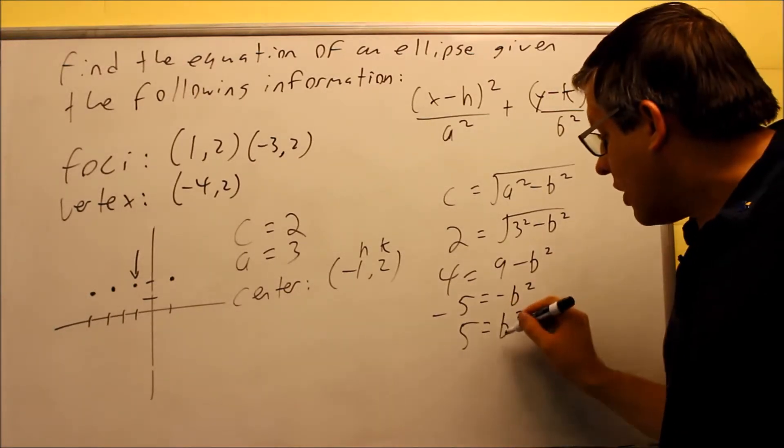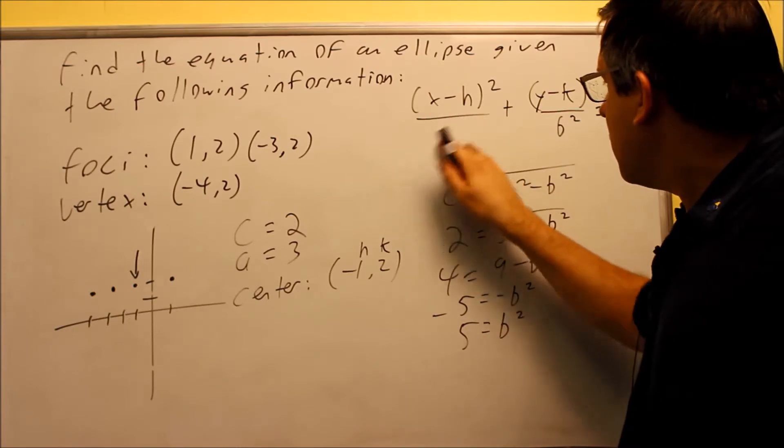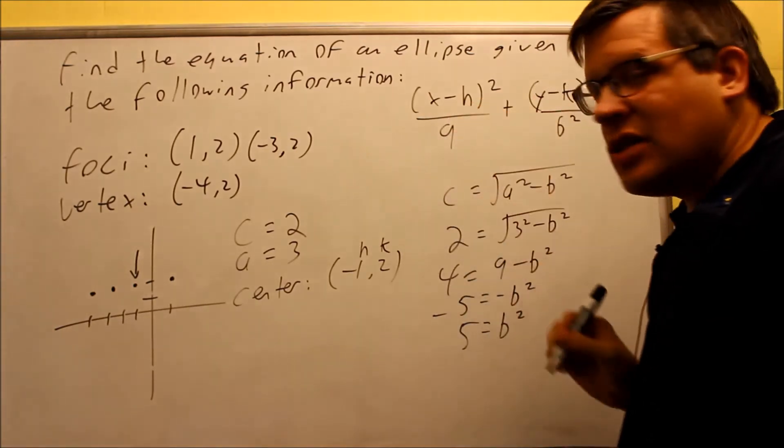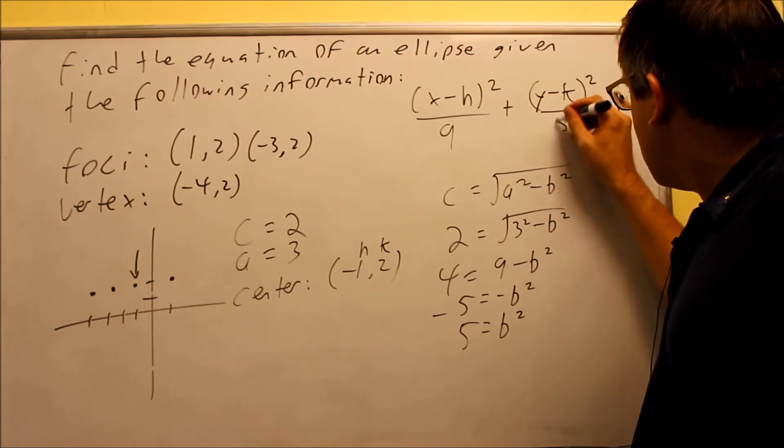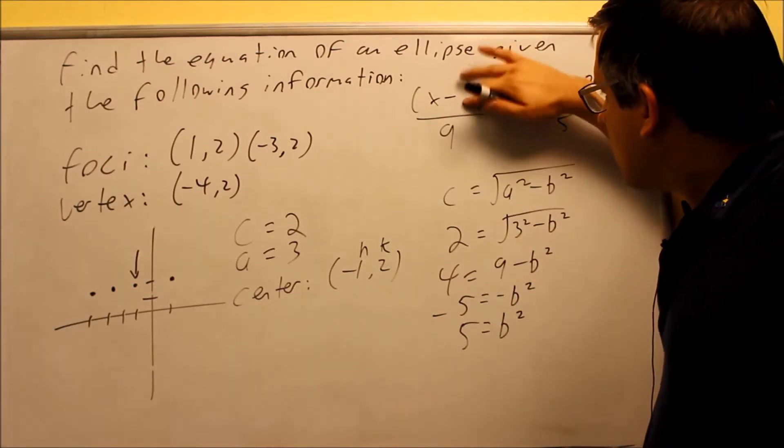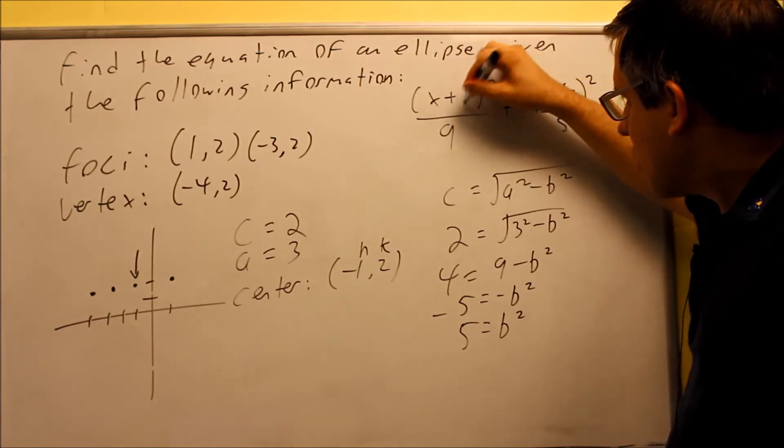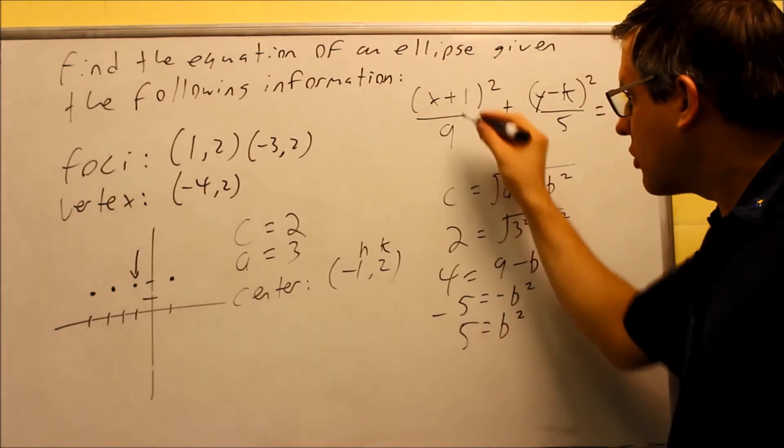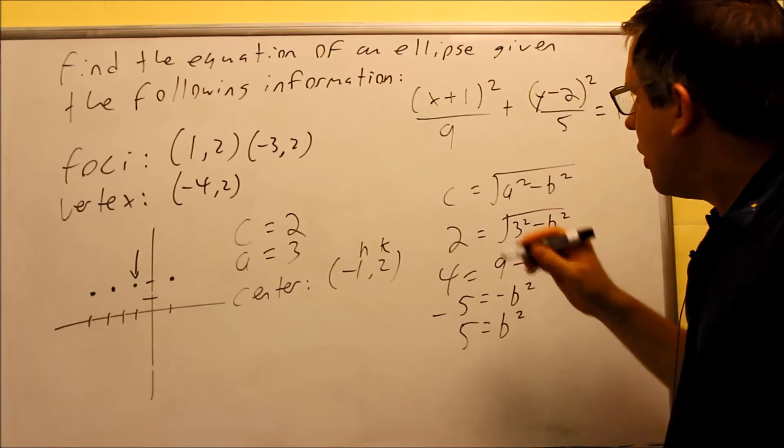So now that we have this, we're ready now to go ahead and put in the two numbers. a squared is going to be, 3 squared is 9. b squared automatically, I know that's going to be 5 because I solved for it here. h, I can put in, h is negative, h minus negative 1, which means this will turn into a plus 1, minus a negative 1, plus 1. And then I have a 2, that's going to go inside this one.